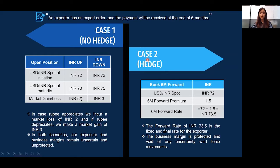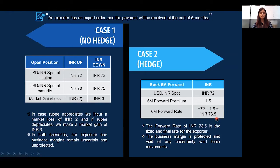Now let's look at Case 2, where we hedge using a six-month forward contract. The current spot rate is 72 and the six-month forward premium is 1 rupee 50 paise. We get the forward rate by adding the spot rate plus the forward premium, which equals 73.50. Costing is done at 72, and the fixed rate we realize at maturity is 73.50. By hedging, we have protected our business margin irrespective of where the markets move. The market gain or loss is unknown at initiation but the business margin is secure and free of any uncertainty.